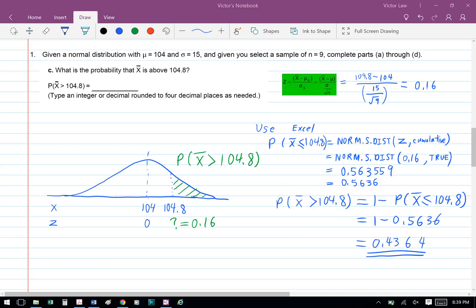In this question, we're trying to find the probability that x bar is greater than 104.8, which is to the right of the value. So we have to do 1 minus probability that x bar is less than or equal to 104.8. So we have 1 minus 0.5636, which gives us an answer of 0.4364, and that's the answer for Part C.